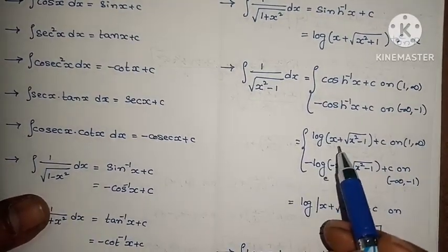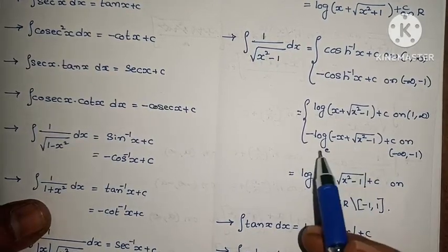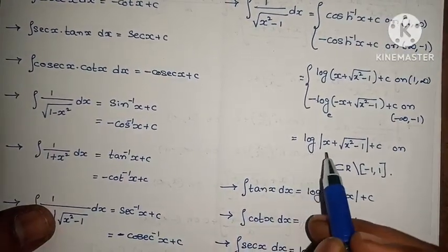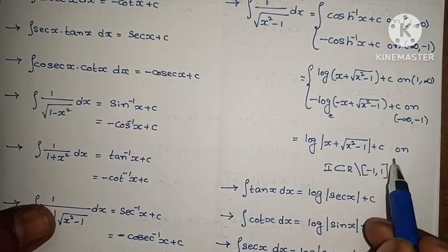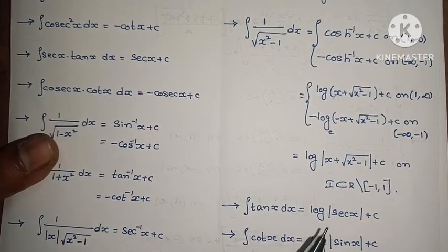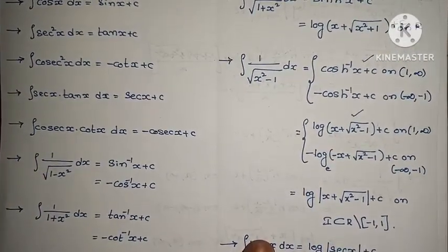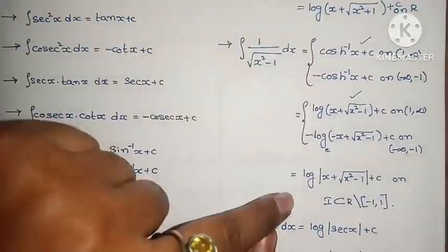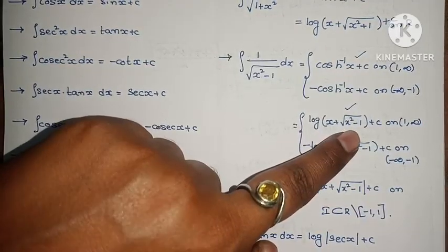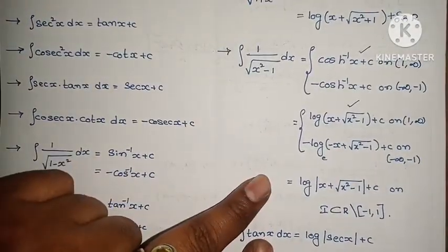For the interval 1 to infinity, use log of x plus root of x²-1 plus c. For the negative interval minus infinity to minus 1, use minus log of minus x plus root of x²-1. This simplifies to log mod(x plus root of x²-1) plus c. When the interval is the closed interval minus 1 to 1, these formulas apply accordingly. Use cosh inverse x or the log form depending on the interval given in the question.